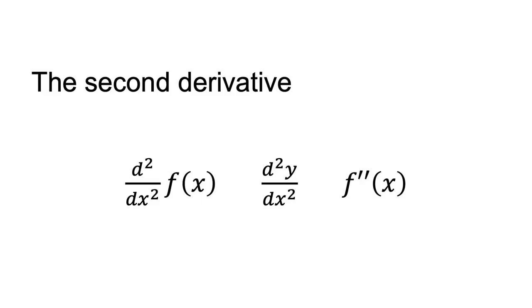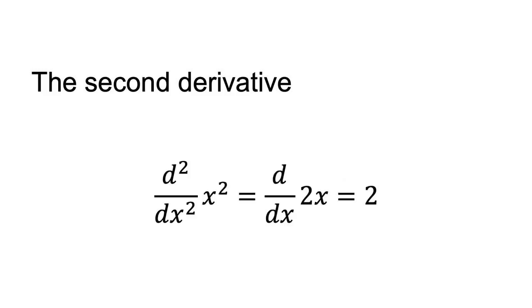The second derivative of a function is written as d squared/dx squared of f of x, or d squared y/dx squared, or f double prime of x. For example, if f of x equals x squared, then d squared/dx squared of x squared equals d/dx of 2x, equals 2. The second derivative is positive, equal to 2, for all values of x. This implies that f of x equals x squared is increasing at an increasing rate — the function is convex.